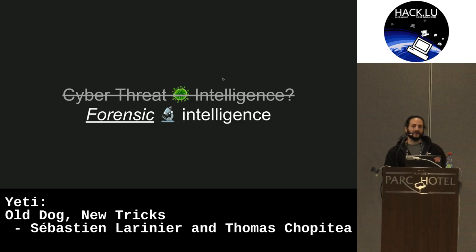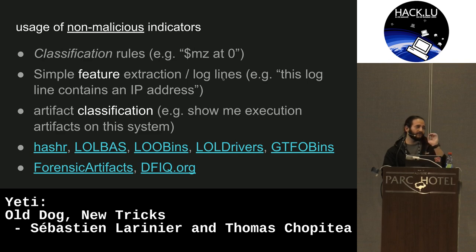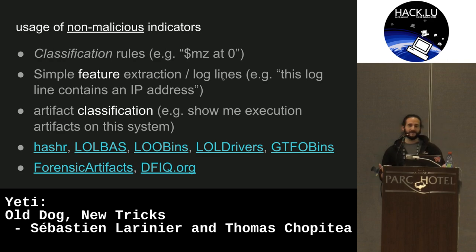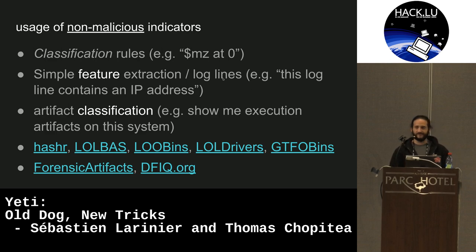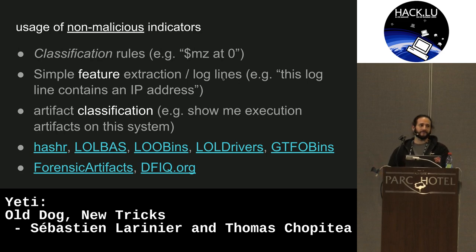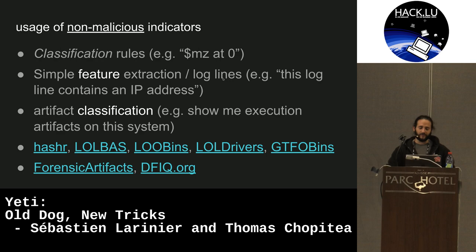I want to start using non-malicious indicators — classification rules. A Yara rule that tells me: these are all the SQLite databases on your system, these are all the binaries. Something that tells me to show all log lines containing an IP address, or all run keys that can be used for execution artifacts. Projects like Hasher — developed by a coworker — take disk images and hash them to a Postgres database. There's also LolBins, LolDrivers, and GTFO bins, which reference legitimate things that can be misused.